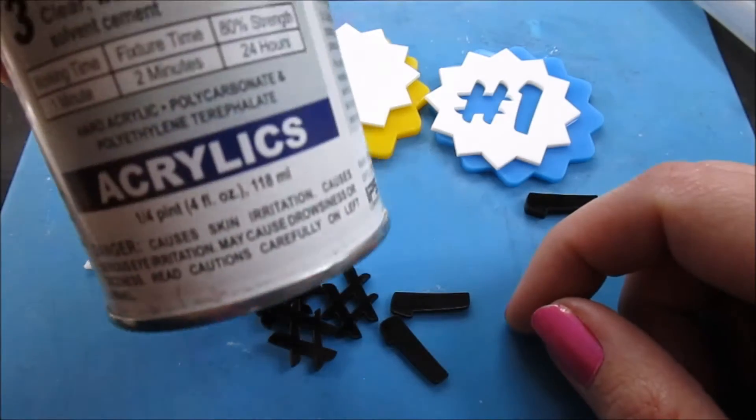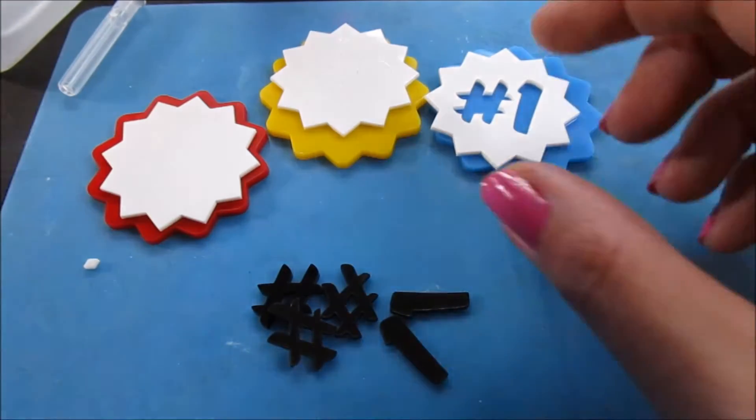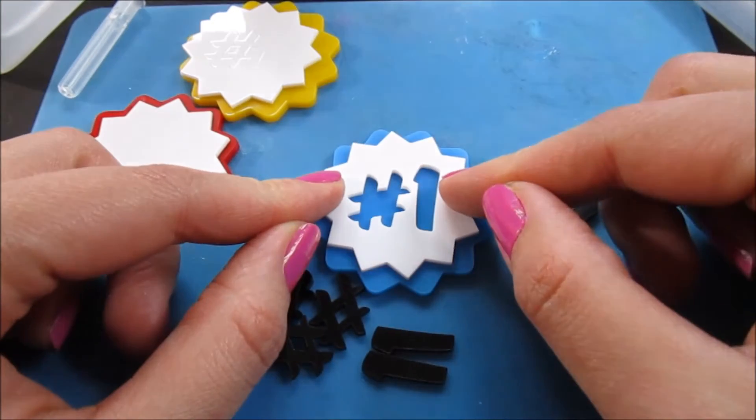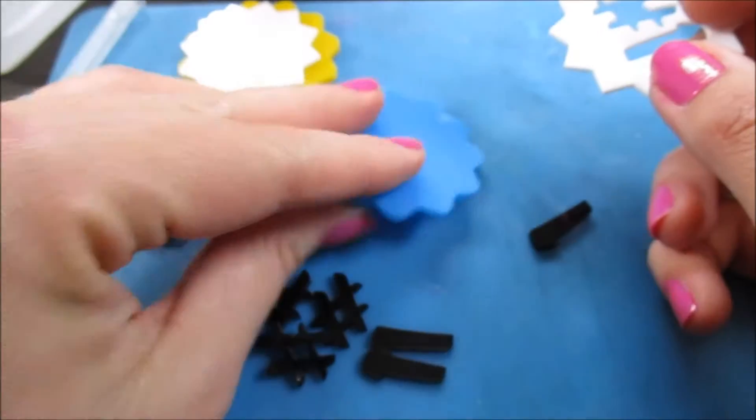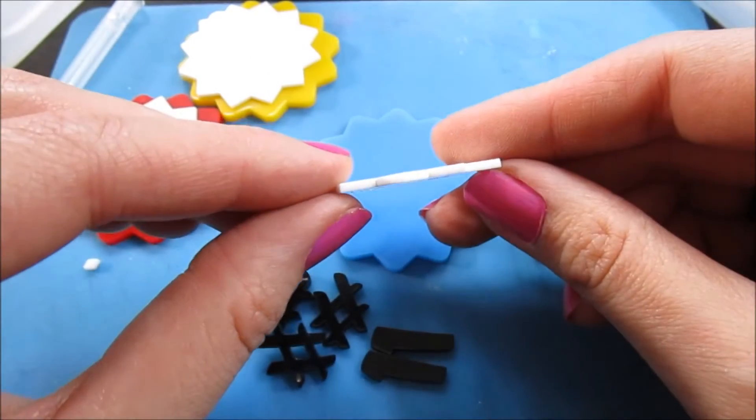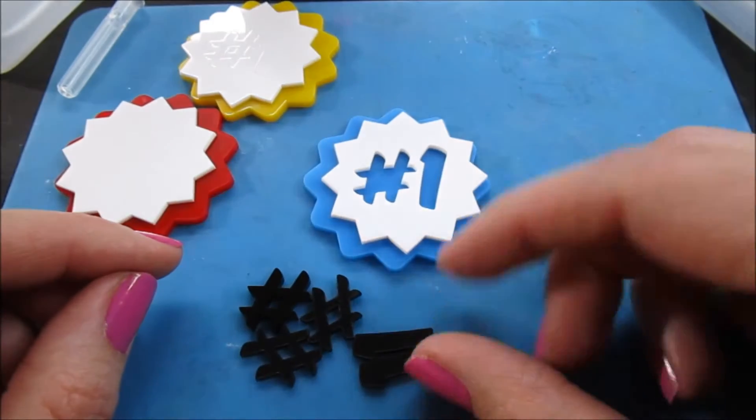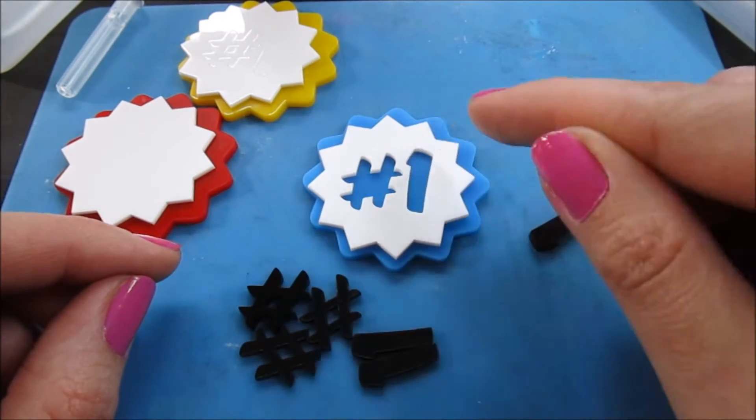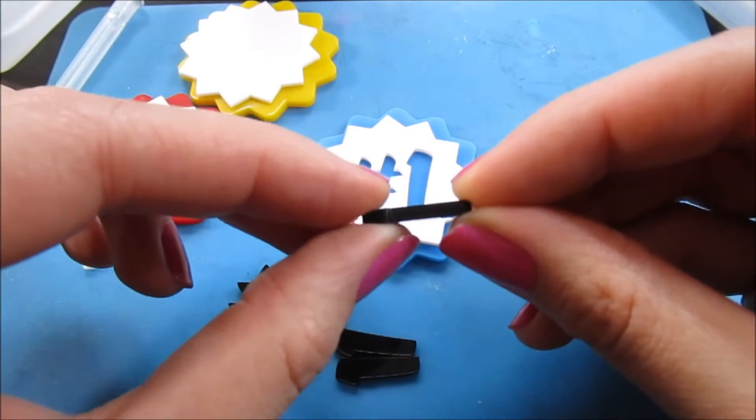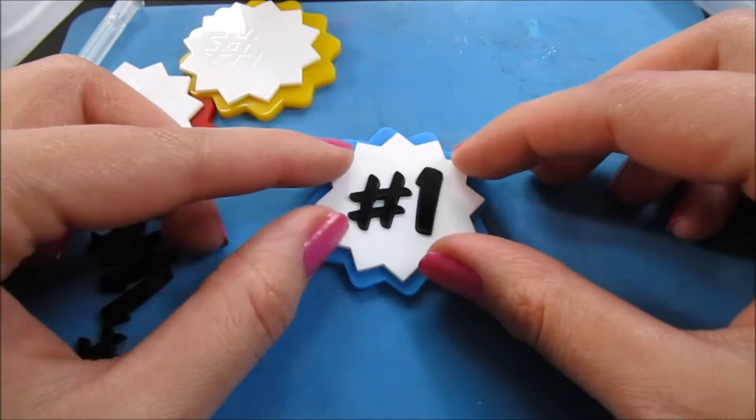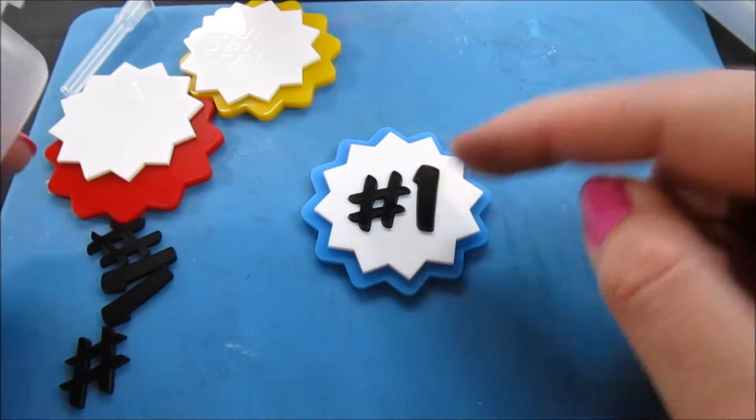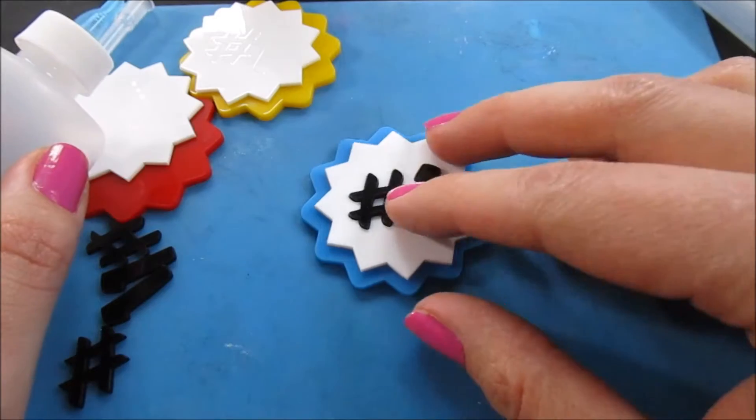We have three different variations of the same file, of the free file download, and we're going to do a little bit different way of putting the solvent on there for each of them. So for the first one where we have the number one totally cut out of it, I have here on the bottom one-eighth inch blue and then one-sixteenth inch white, and then that I'm going to kind of embed into the white is a one-eighth inch black.